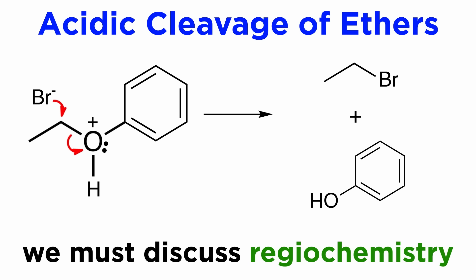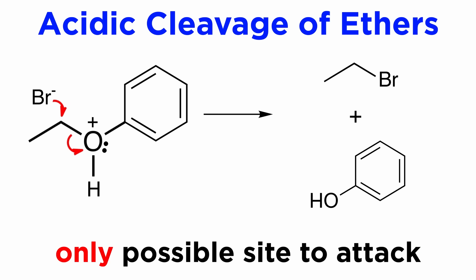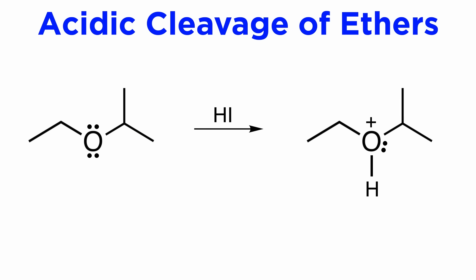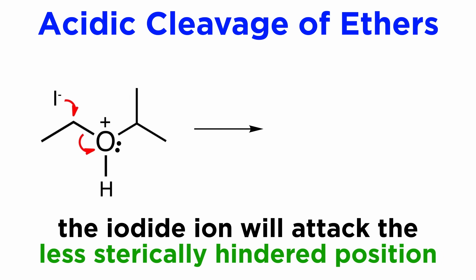This is very simple chemistry, but there is one important thing to understand in terms of regiochemistry. In the case of ethyl-phenyl ether, there was only one possibility in terms of where the bromide could attack. But if we were looking at something like ethyl-isopropyl ether reacting with hydroiodic acid, we have to understand that the iodide would attack the less-hindered alkyl position because there is less steric hindrance. This will yield isopropyl alcohol and iodoethane, as opposed to the other two possible products.